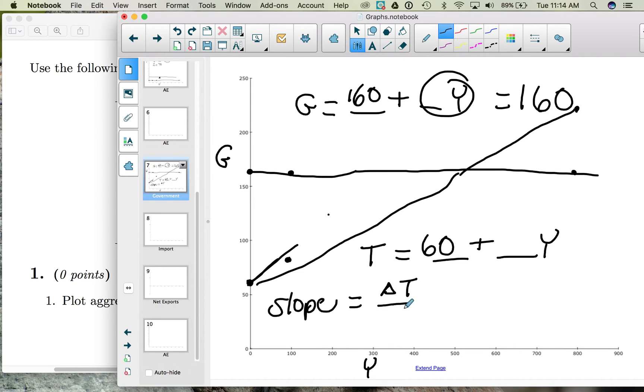So we're looking at the change in taxes divided by the change in income. Well, taxes go from 60 to 220. So 220 minus 60. And our income goes from zero to 800. So we do 800 minus zero. If we take 220 minus 60, we get 160. And 800 minus zero is 800. So our slope here is 0.2.